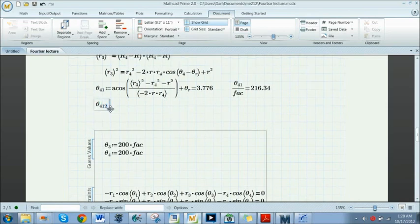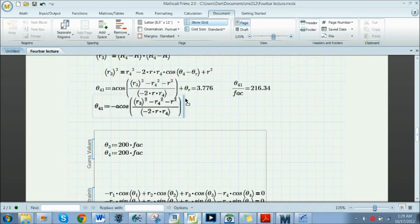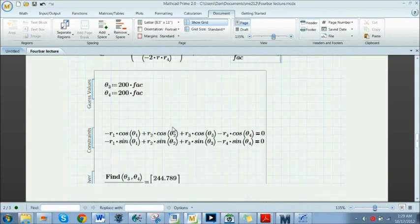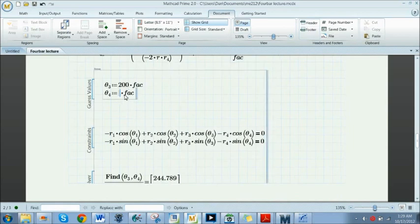Now if I want the second solution, theta 4-2, I would have the negative of all of this stuff. You can see why sometimes it's nicer just to call something a or b or c. Well that's pretty lazy, I can type that. Plus theta R equals something, and let's not call that theta 4-1 because it's theta 4-2. Now you get theta 4-2 is equal to 117.